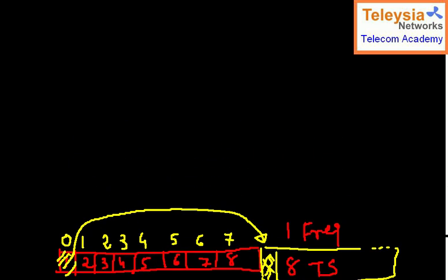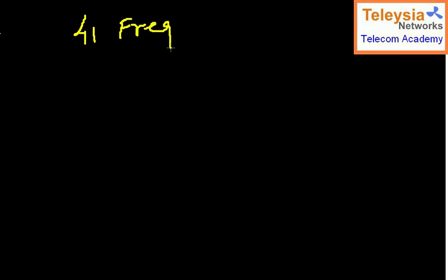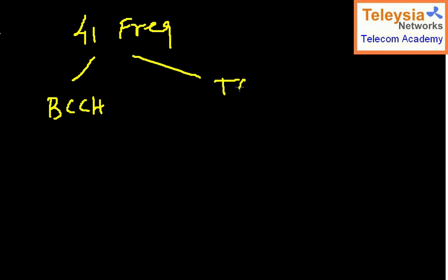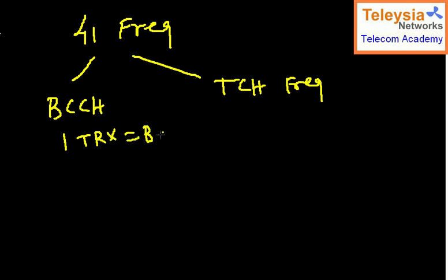In one frequency you have eight users, and you have a total of 41 frequencies in your network. It is very important to understand that you cannot use all frequencies for traffic — certain frequencies must be used for signaling. We have two major categories: BCCH frequency and TCH frequency. In each cell site you need to plan at least one TRX as a BCCH TRX.